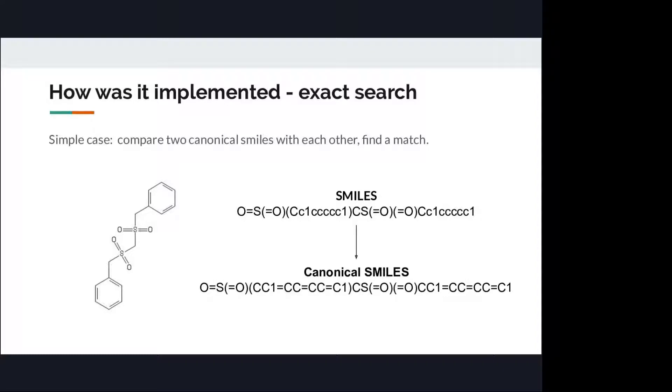Exact search. Exact search is pretty simple. It is just a match of two strings, two smiles. But there is one issue. The same chemical structure may have several smiles. They all valid, but it is complex to check all of them. We have to define a canonical smiles. And based on canonical smiles, we'll apply an exact search.